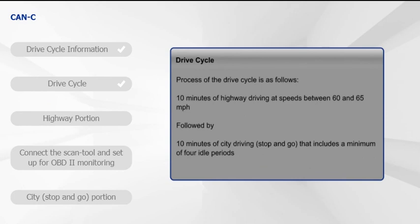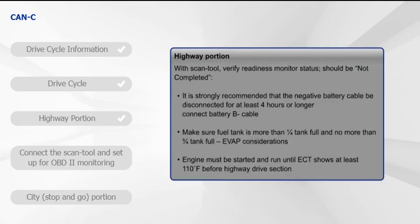The process of the drive cycle is as follows: 10 minutes of highway driving at speeds between 60 and 65 miles per hour, followed by 10 minutes of city driving — stop and go — that includes a minimum of four idle periods. For the highway portion, verify with the scan tool that readiness monitor status is not completed. It is strongly recommended that the negative battery cable be disconnected for at least four hours or longer. Reconnect the battery cable and make sure the fuel tank is more than one-quarter full and no more than three-quarters full. EVAP considerations: the engine must be started and run until ECT shows at least 110 degrees Fahrenheit before the highway drive section.